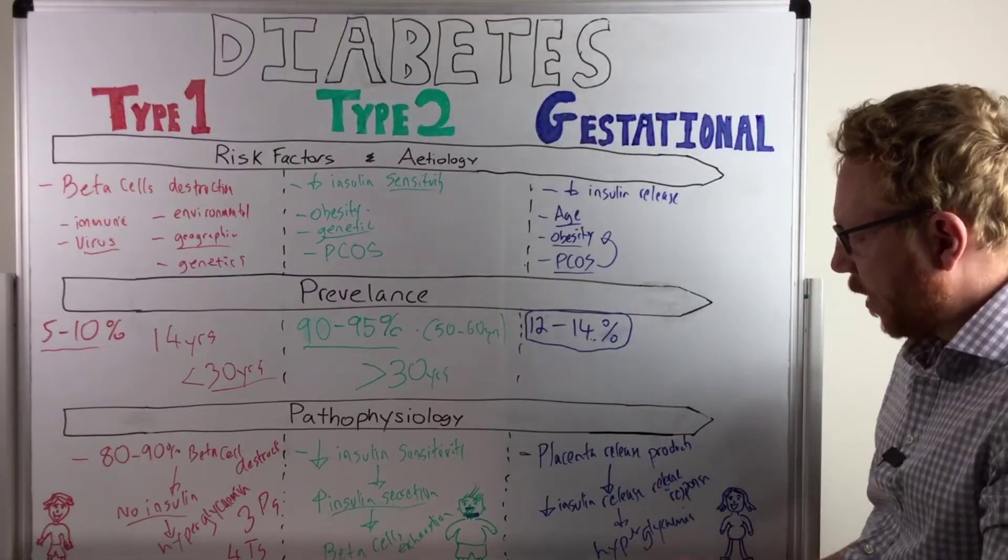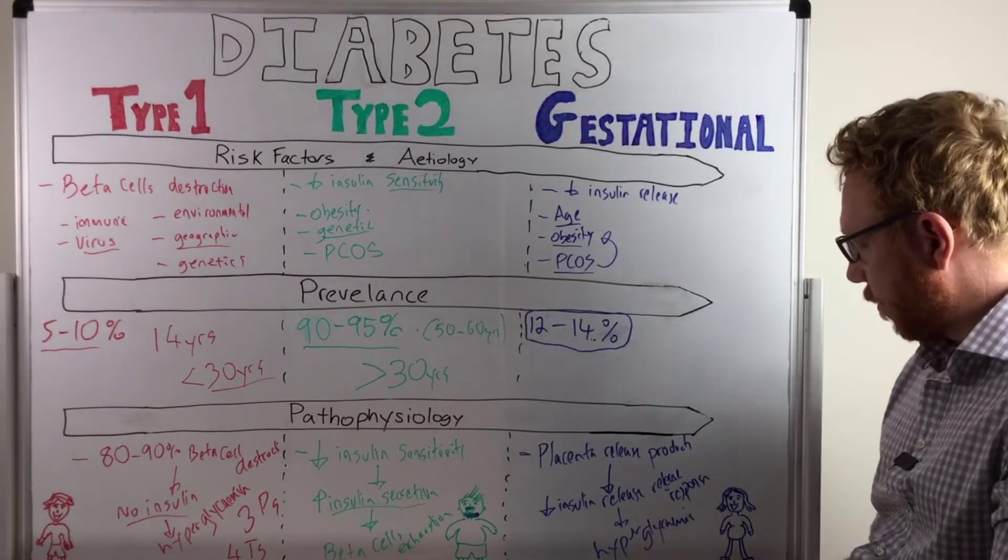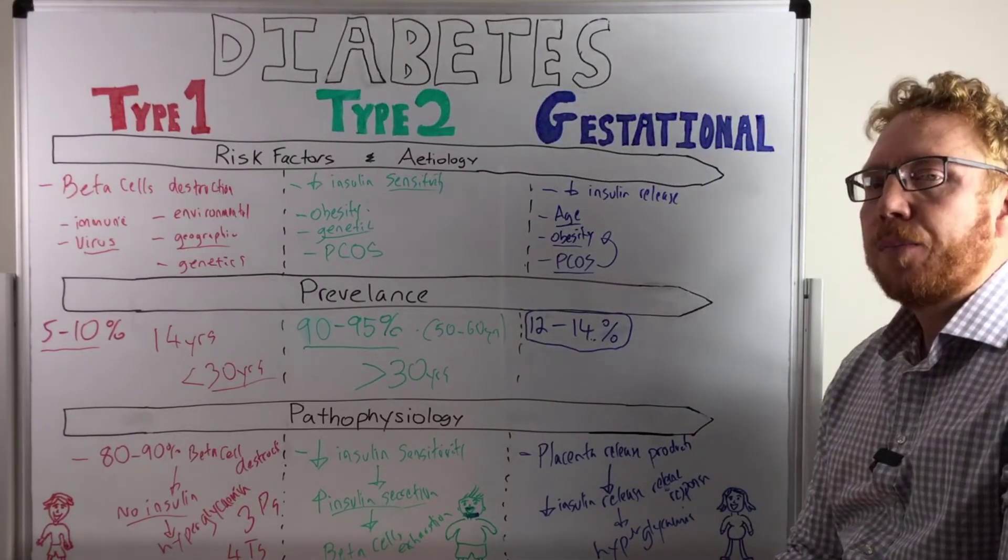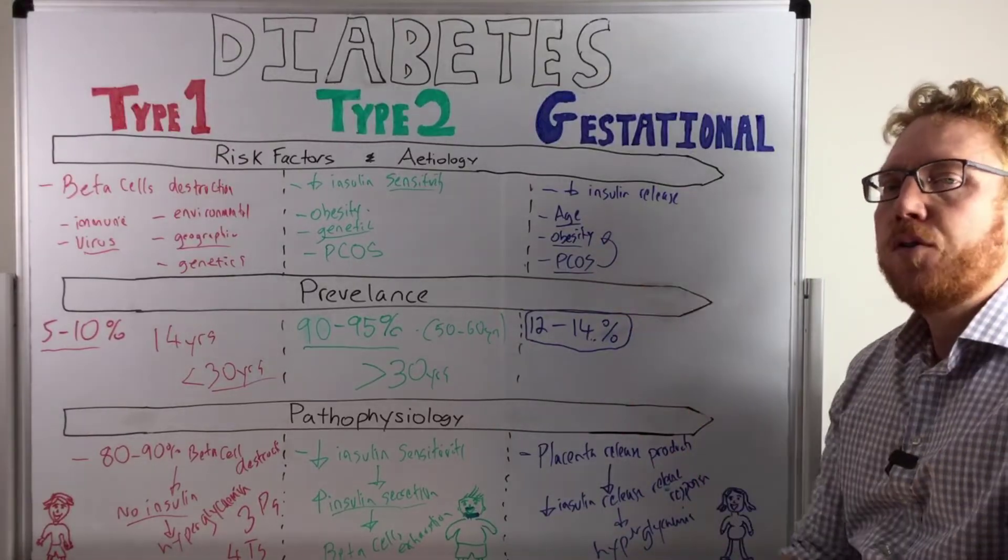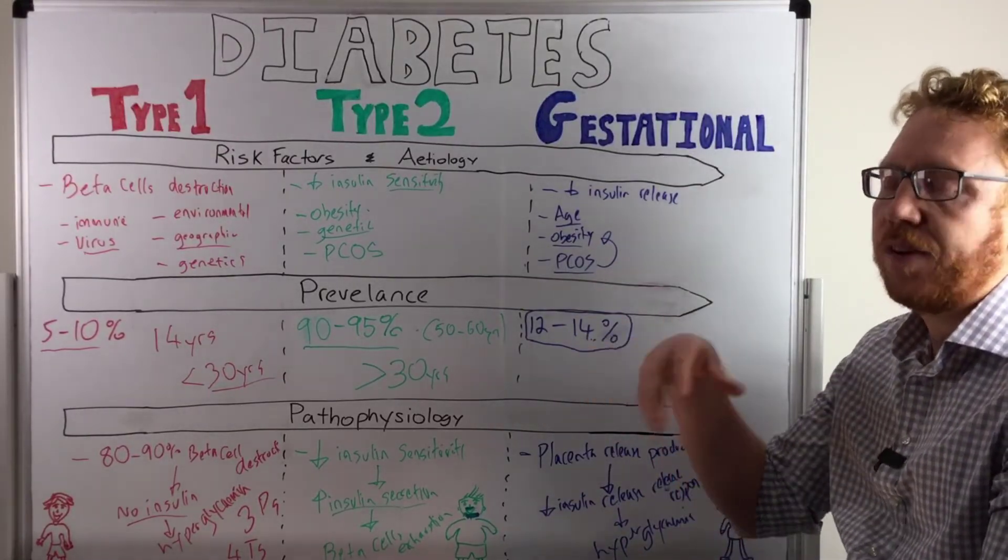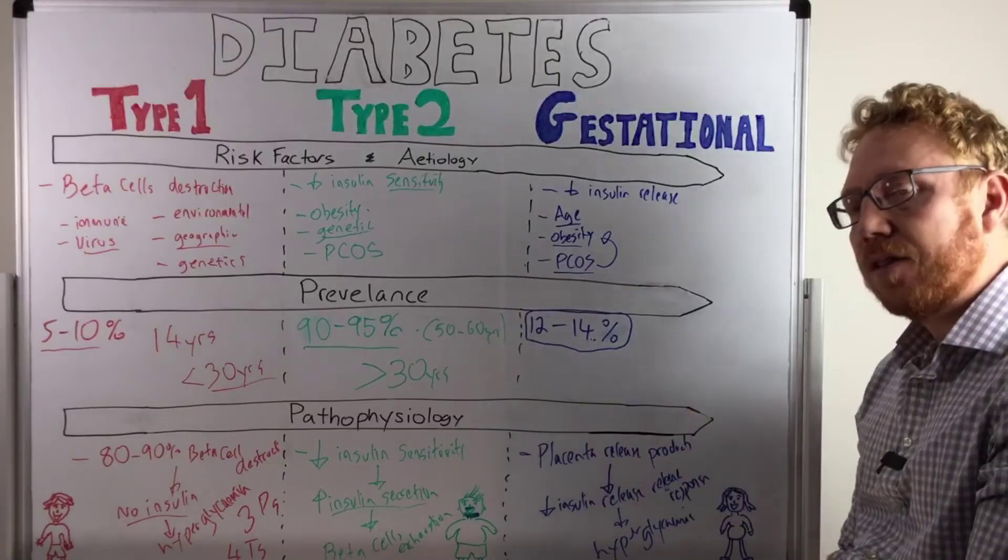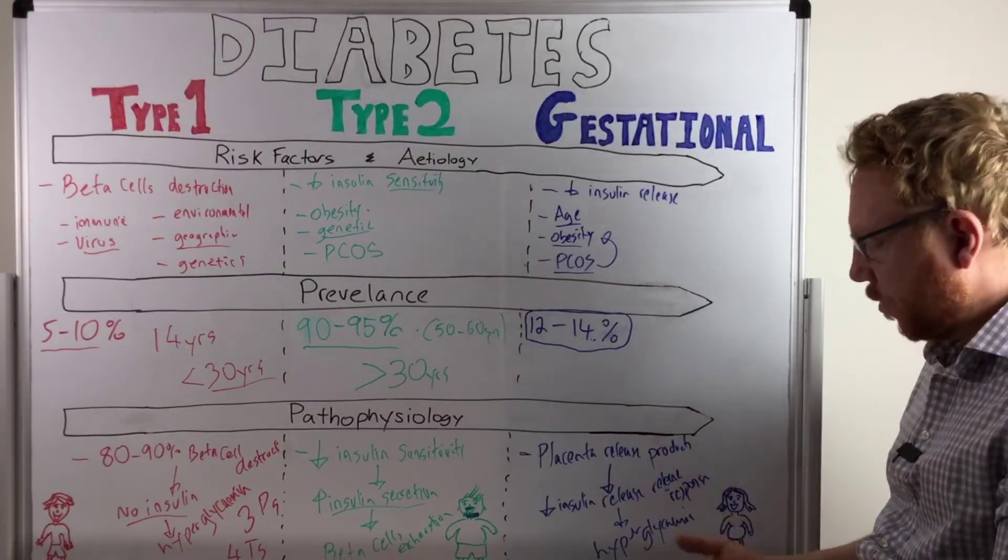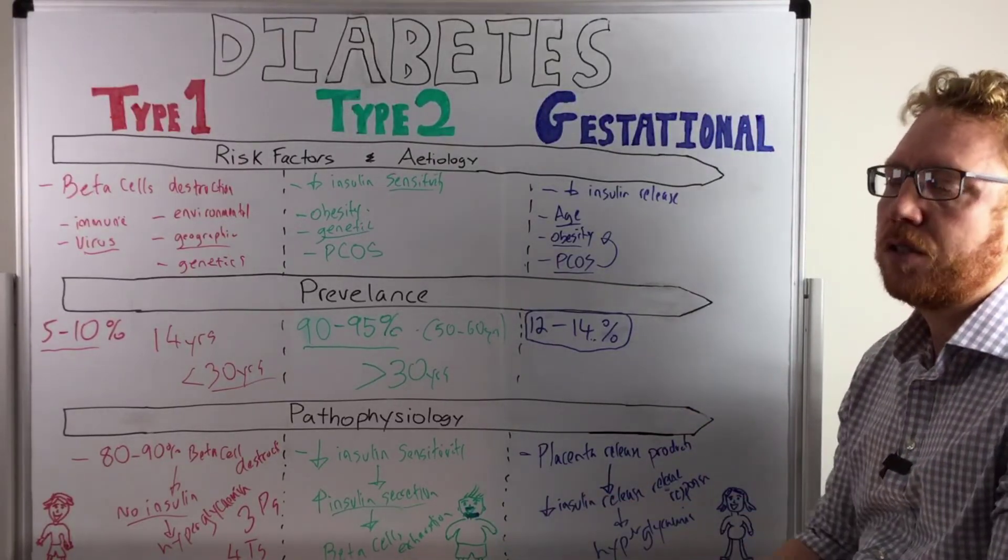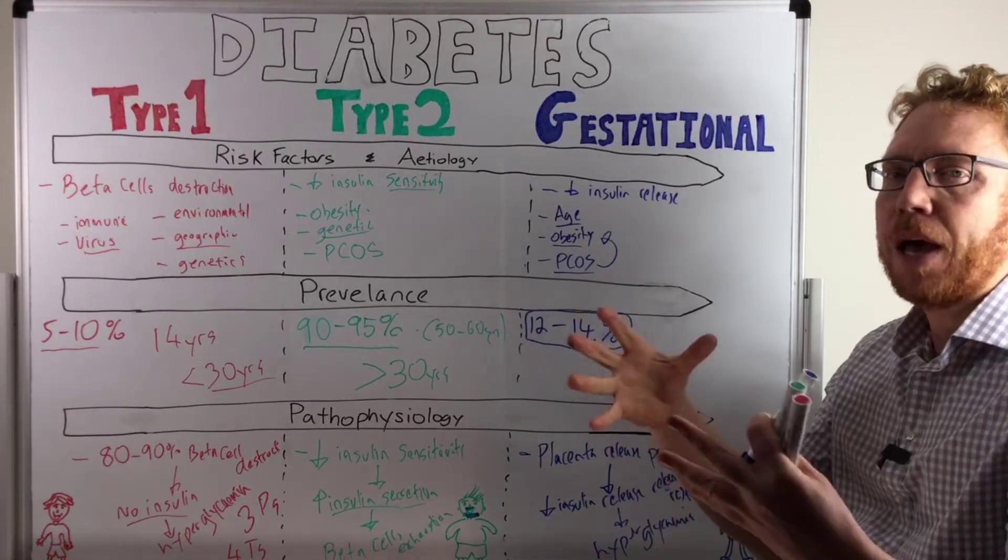So as a result of the hyperglycemia, and this is the main issue, is you could have detriment to both the baby or the fetus or the mother. In terms of the fetus, that high amounts of sugar going into the baby will cause it to get bigger, so it's a larger baby.